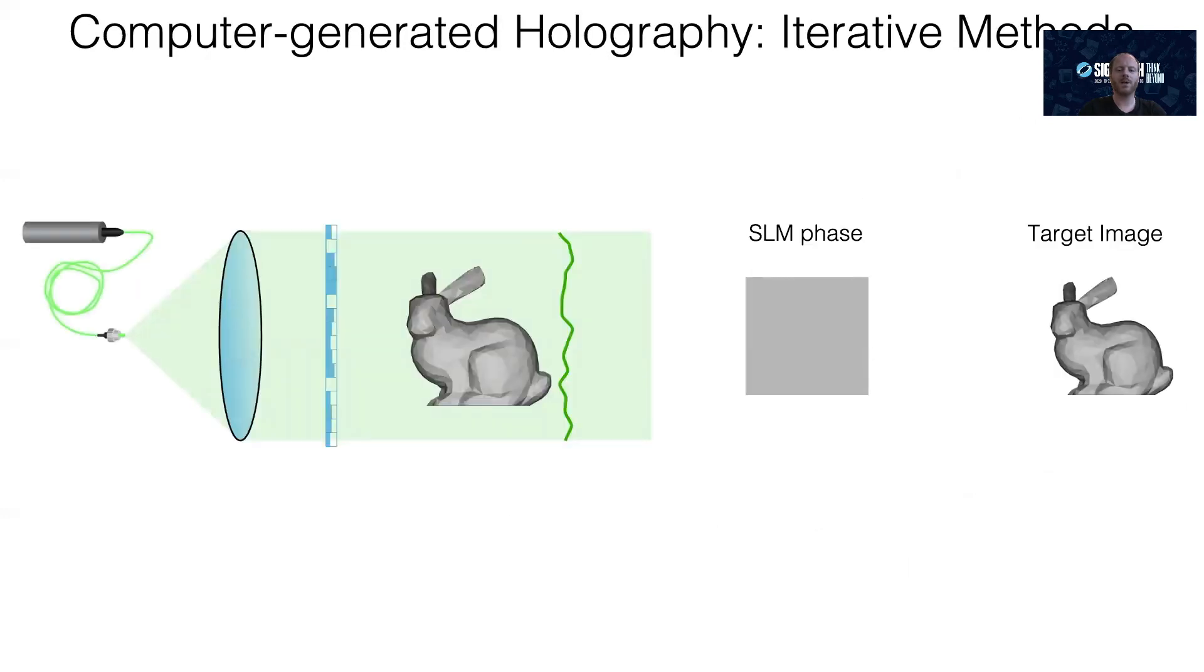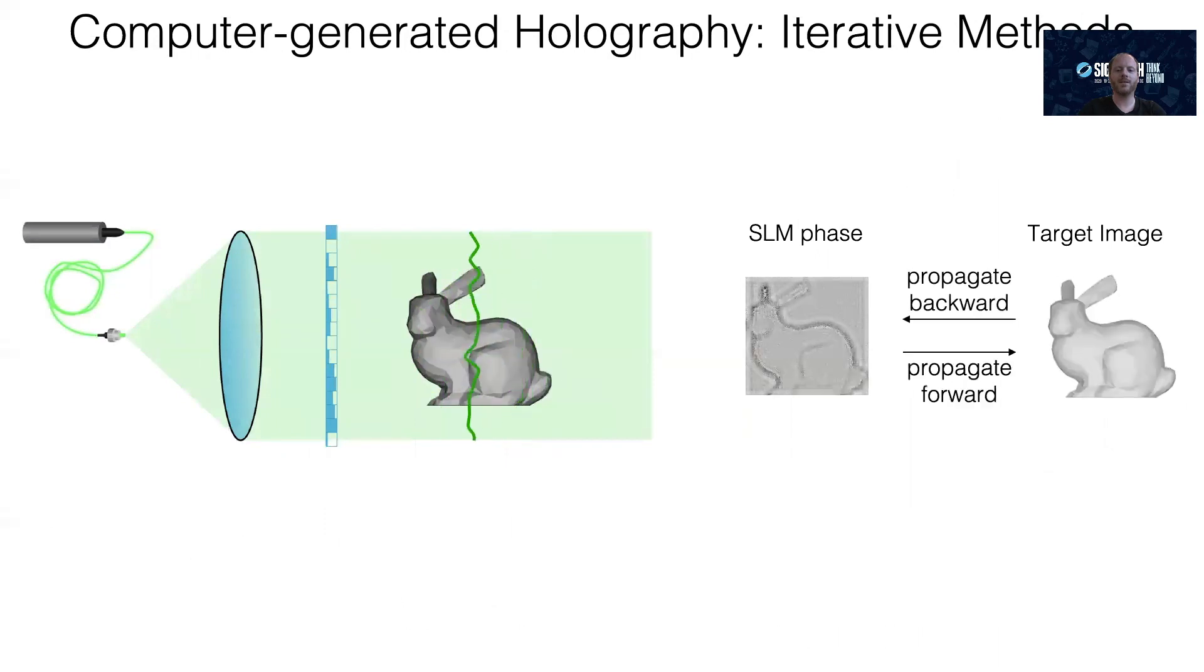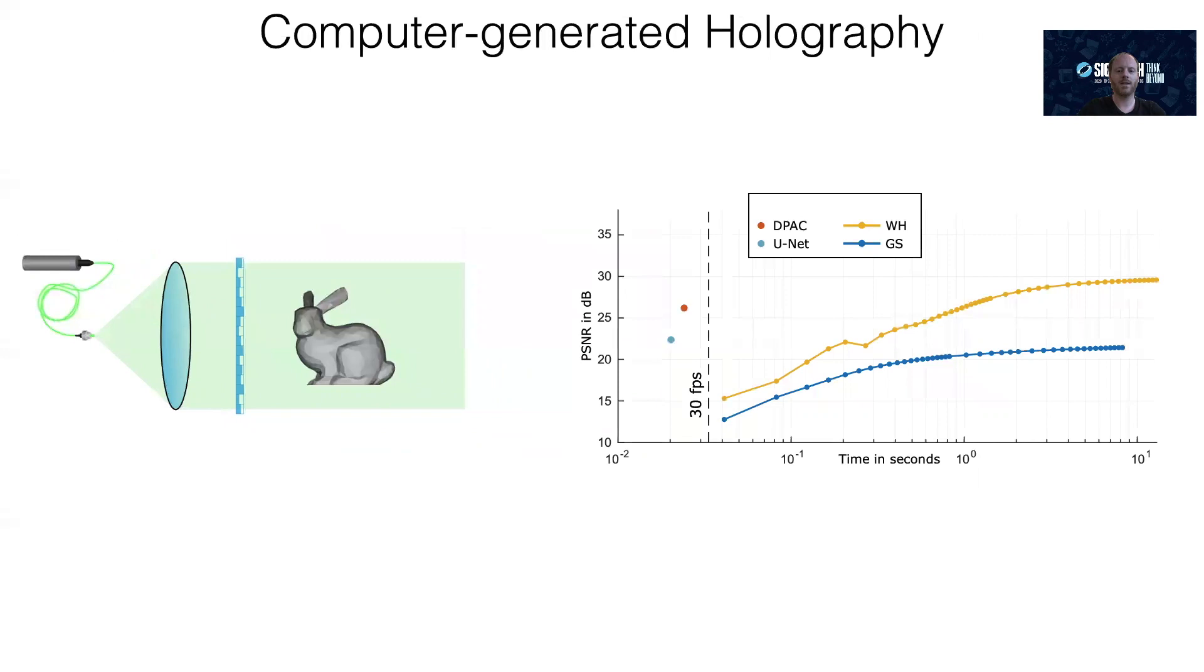Using the same free-space propagation models as described before, we can use iterative methods as well. Here, we iterate several times between the SLM phase pattern and the target intensity. This is much slower than a direct approach, but it typically gives us a better phase-only representation of the target image. In summary, iterative methods are typically slower, but better, and direct methods are fast, but often not great. With any iterative methods, such as the classic Gerchberg-Saxton algorithm or the recently proposed Wirtinger holography approach, we can iterate longer to get slightly better image quality, but there's an upper bound on what can be achieved.